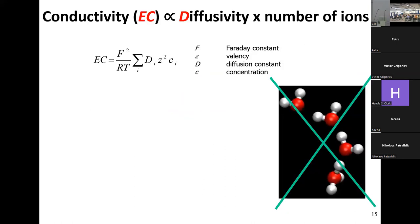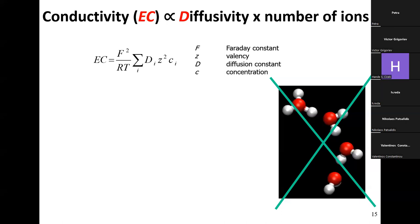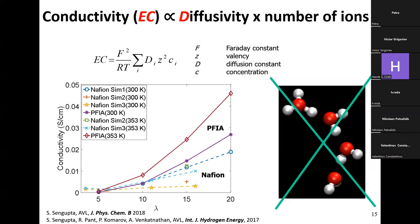To get proton conductivity from diffusion, we use the Nernst-Einstein equation, which connects electrical conductivity to the diffusion constant of ions, their charge valency, and their concentration. Since PFIA has more ionizable groups, the concentration of ions is higher, so the classical conductivity is larger even though diffusion constants are similar. These values are still lower than experiment, partly because Grotthuss transport is not included.